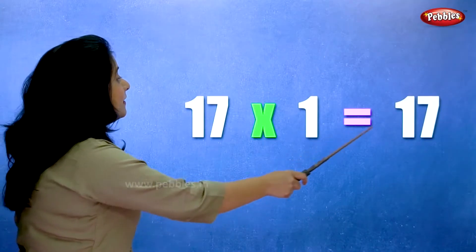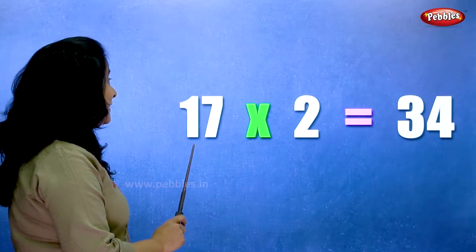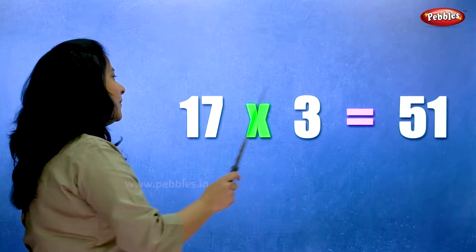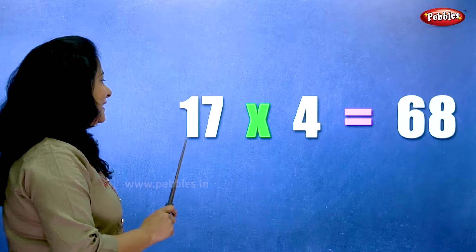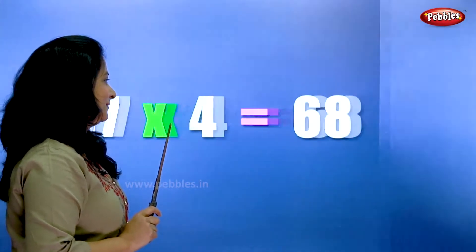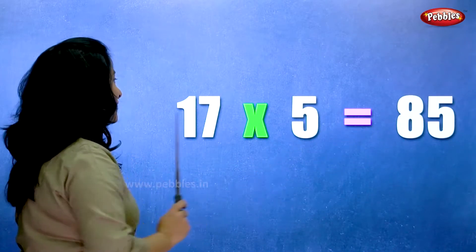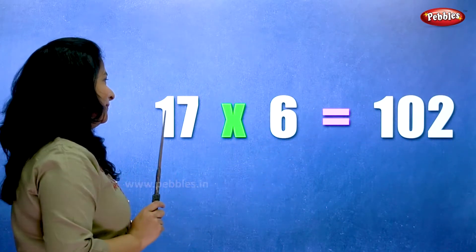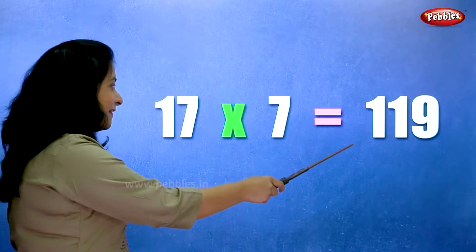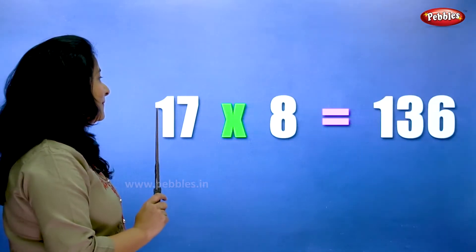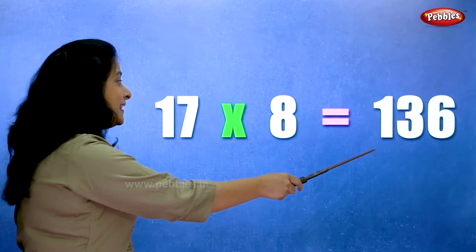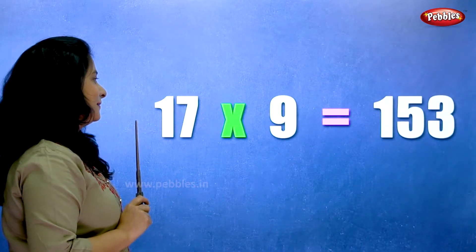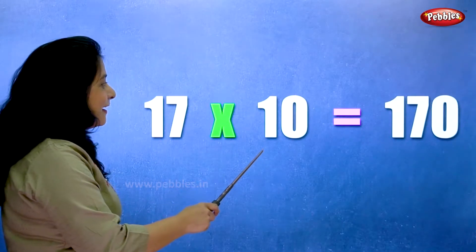17 ones are 17. 17 twos are 34. 17 threes are 51. 17 fours are 68. 17 fives are 85. 17 sixes are 102. 17 sevens are 119. 17 eights are 136. 17 nines are 153. 17 tens are 170.